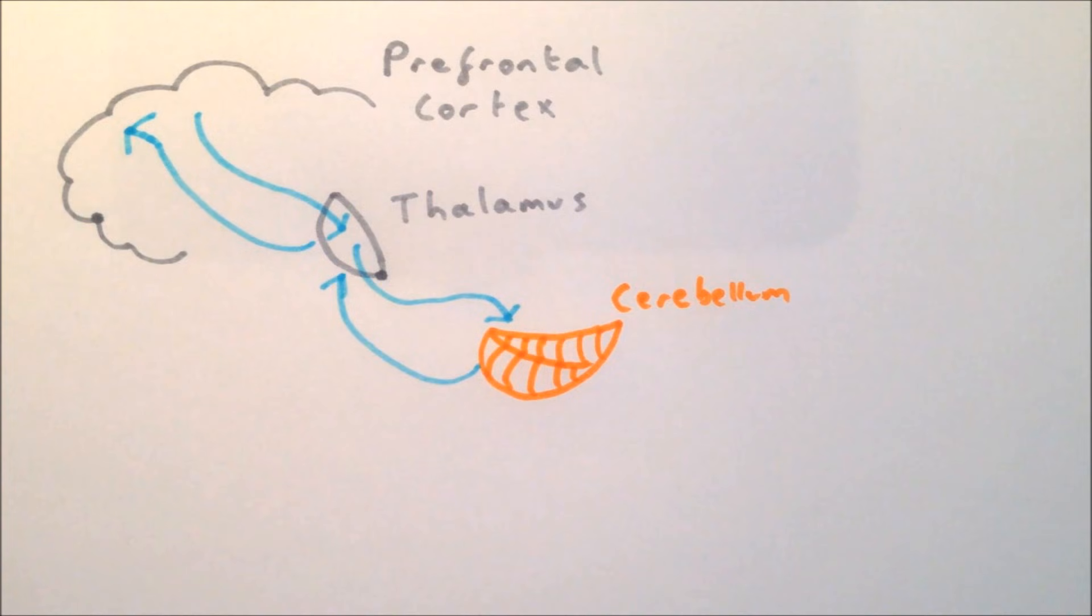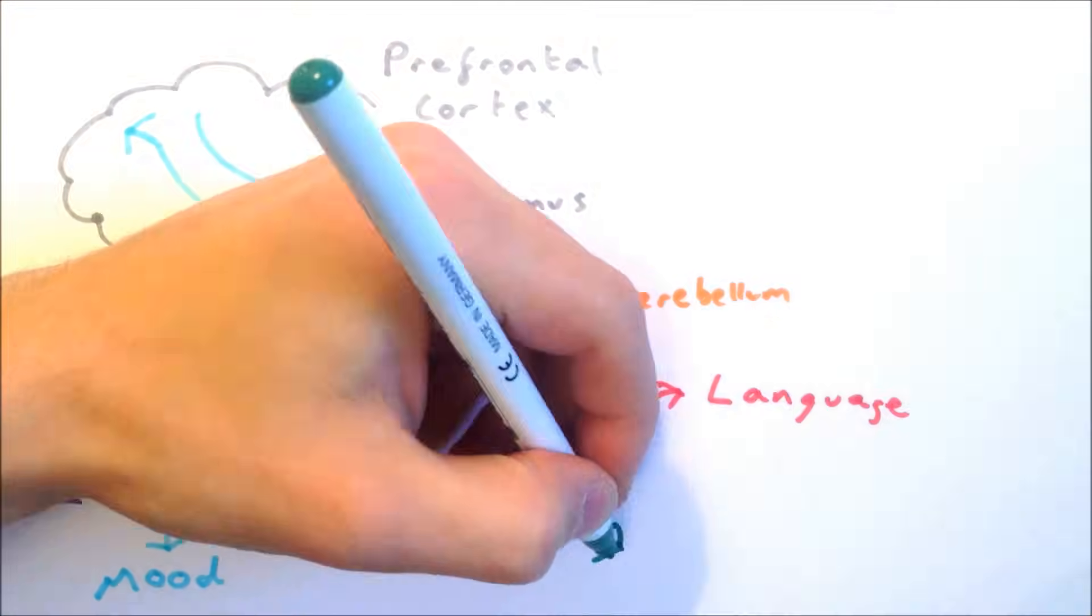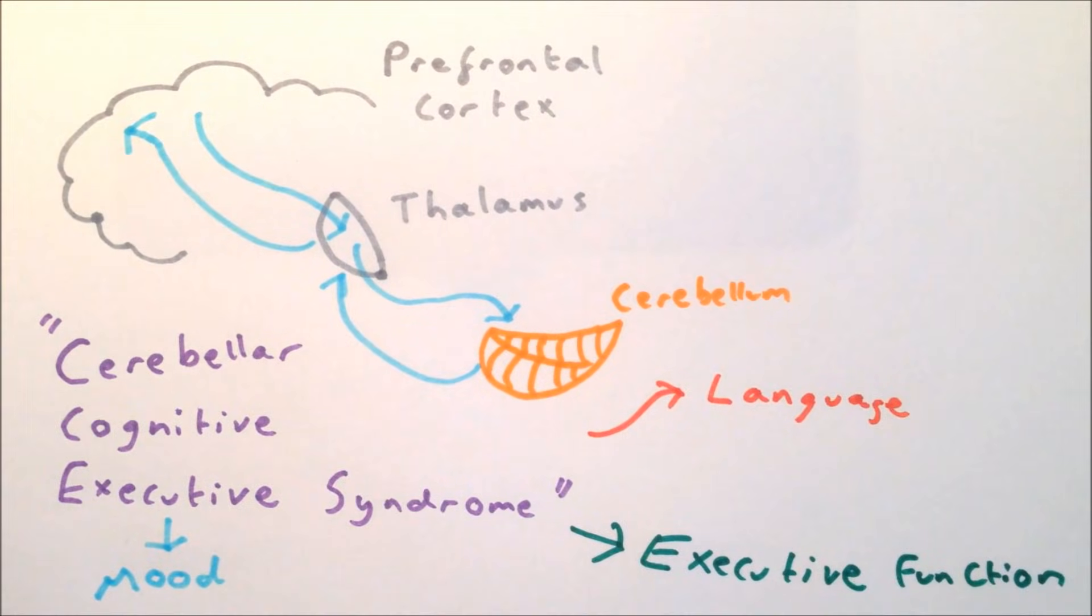New studies have demonstrated connections from the prefrontal cortex to the cerebellar cortex, and those who have damage to the cerebellum can also have deficits beyond movement coordination, including problems with executive function and mood. This has been dubbed cerebellar cognitive affective syndrome.